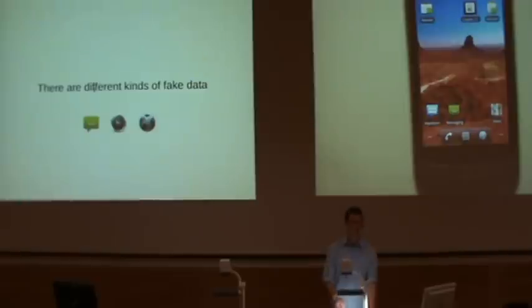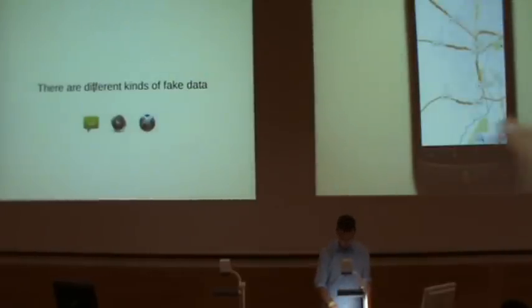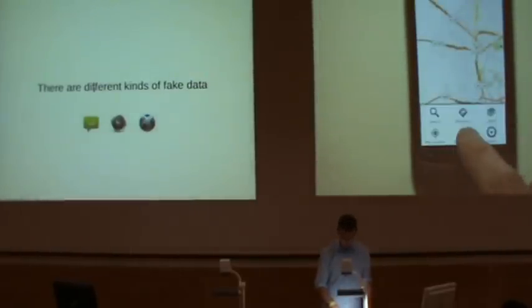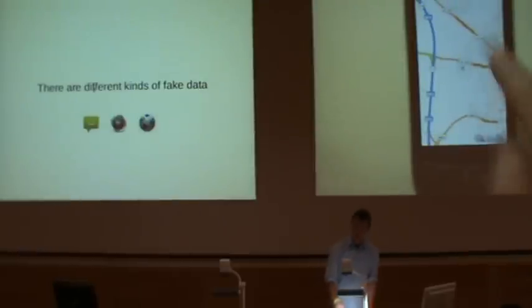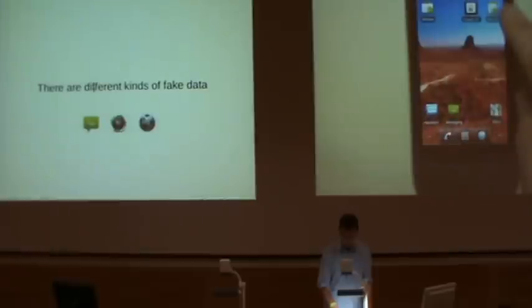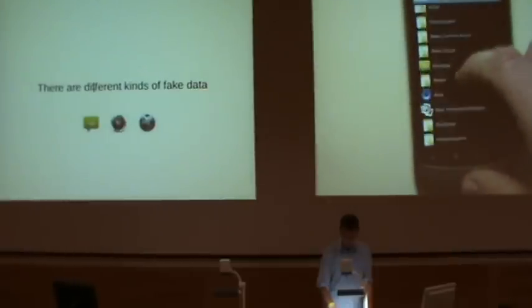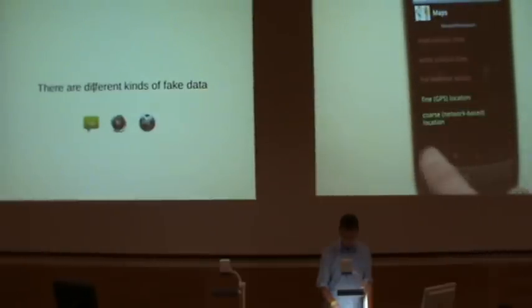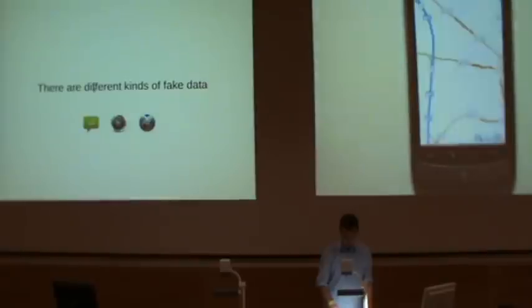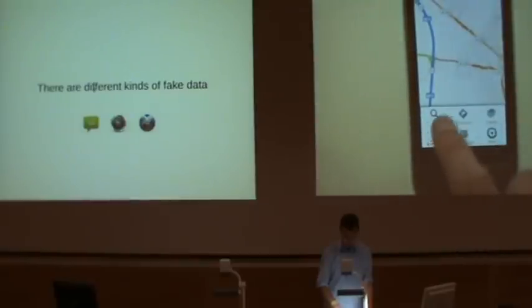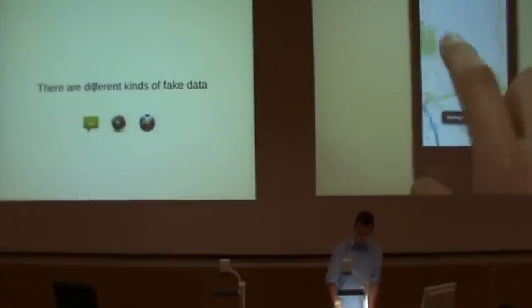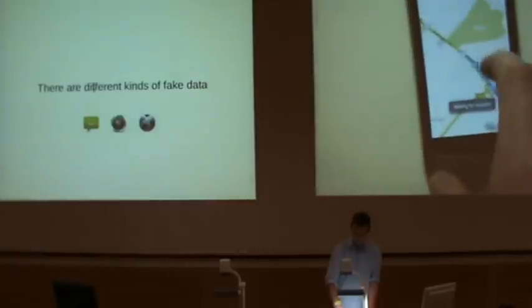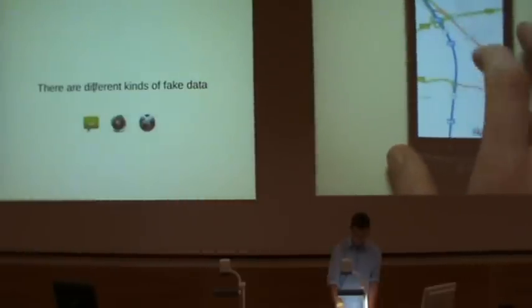Finally, we have framework feature mocking. For example, we can mock a maps application that requests access to my location and displays a map. I can go to Mocker, find the app, and not allow it access to location. Then my location won't work for that app, but the rest of the application still functions as intended.